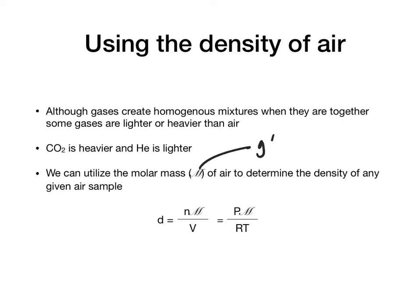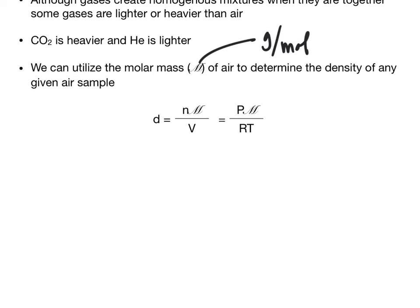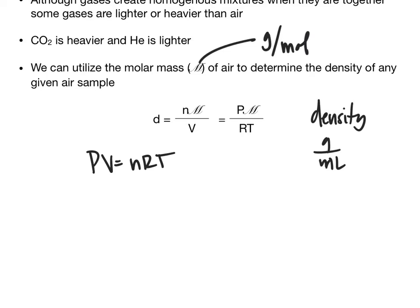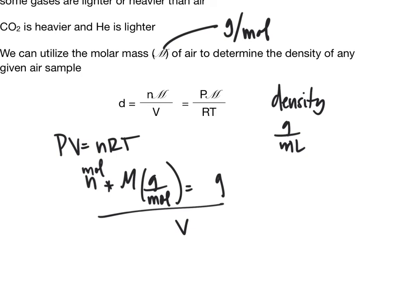Molar mass is grams per mole. The density of a gas equals n times the molar mass divided by the volume. Since density is grams per liter, and moles times grams per mole gives grams, dividing by volume gives grams per liter. The resulting formula is: density equals pressure times molar mass divided by RT.